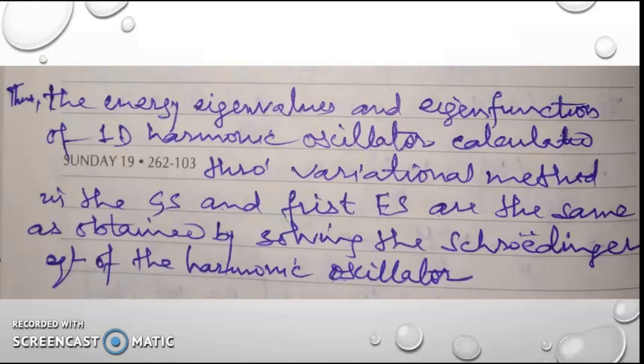Thus, the energy eigenvalues and eigenfunctions of the one-dimensional harmonic oscillator calculated through the variational method in the ground state and the first excited state are the same as obtained by solving the Schrödinger equation of the harmonic oscillator. Thus we come to the end of the calculation. Thank you so much for watching.